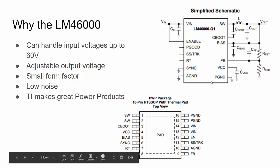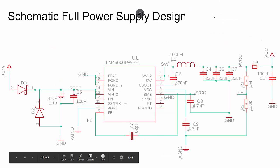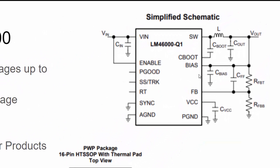TI's products are fairly low noise. Here's the simplified schematic — relating it to the basic circuit we just saw, here's our flywheel circuit: the inductor and output capacitor. You don't see the diode because TI integrates it inside the IC. Then we have some other components for biasing and the feedback loop.